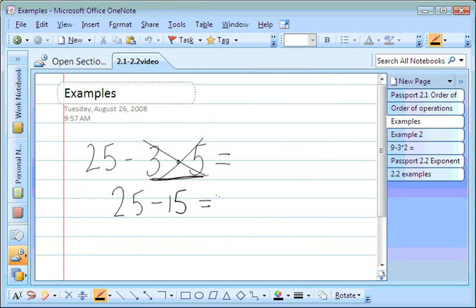If it helps you, you can cross that off so you know you've already done it. To finish solving this problem, we go to the last step in the order of operations, which is addition and subtraction from left to right. We have subtraction, so 25 minus 15 equals 10, and that's your answer.